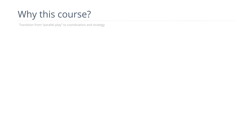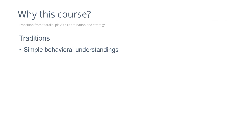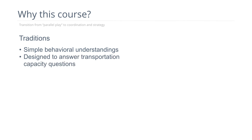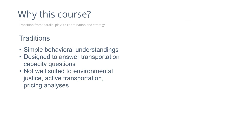Why do we need this course? Contemporary transportation challenges require new modeling approaches. The four-step model has rather simplistic behavioral understanding — the core reason for choices is represented in a relatively simple way. It was really created to answer capacity questions: should we build a freeway here, how big should it be, where should it go? It is not as well suited to environmental justice, active transportation, and pricing questions, which are increasingly things we're addressing.